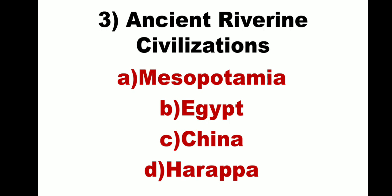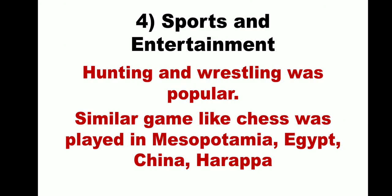Let us see the next point: sports and entertainment. Hunting and wrestling were famous in ancient civilization. A game played with a game board and game pieces was very popular in Egypt, known as Senet. Similar games were played in China, Mesopotamia, and Harappan civilization — for example, chess. Many toys were found in Harappan civilization, including whistles, rattles, bullock carts, and animal and bird figures on wheels. Music and dance were part of celebrations and festivals, and ancient people used many types of musical instruments.